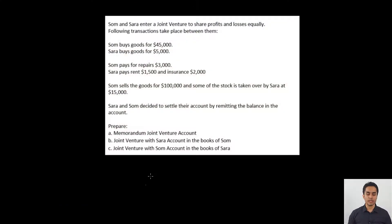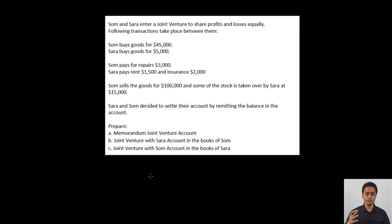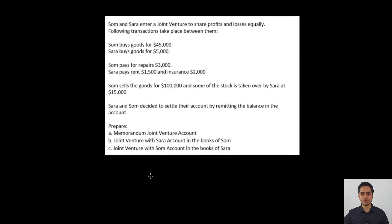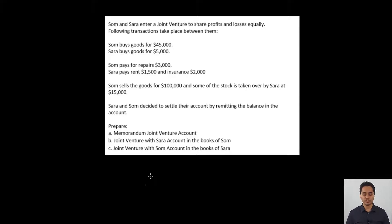Here is an example to understand the method better. SOM and SARA enter into a joint venture to share profits and losses equally. SOM buys goods worth $45,000 for the venture; SARA buys goods worth $5,000. SOM pays repairs of $3,000; SARA pays rent and insurance. SOM sells the goods for $100,000 and some stock is taken over by SARA at $15,000. SARA and SOM decide to settle their account at the end by remitting the balance. The question requires us to prepare the memorandum JV account and the JV accounts in the books of both SOM and SARA.